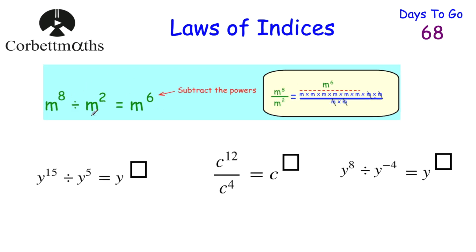Our next law: if we're dividing things with the same base, we can take away the powers. So if we had M to the power of 8 divided by M squared, we do 8 take away 2, which equals 6, so the answer is M to the power of 6. To verify: M to the power of 8 is eight M's multiplied together, and dividing by M squared cancels two of those M's, leaving six M's — so M to the power of 6. If you're dividing things with the same base, you subtract the powers.